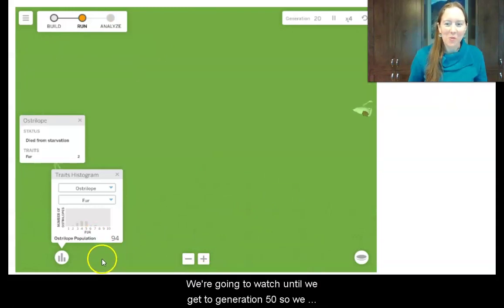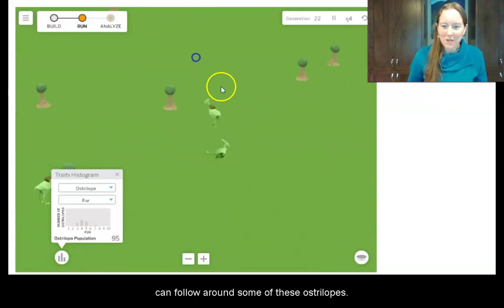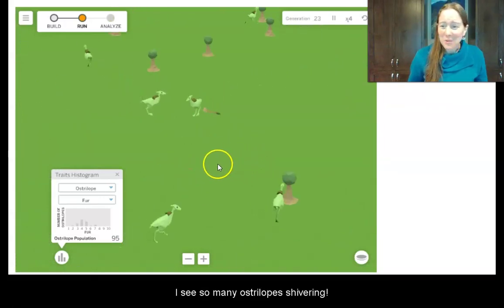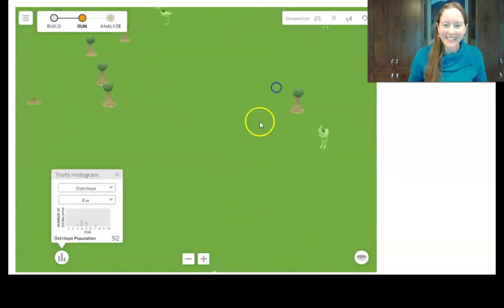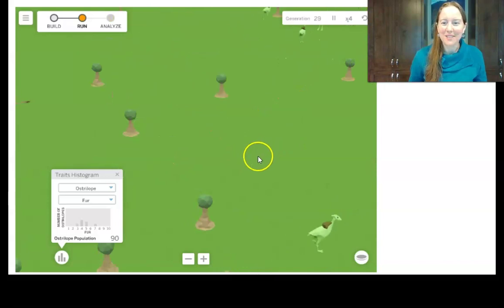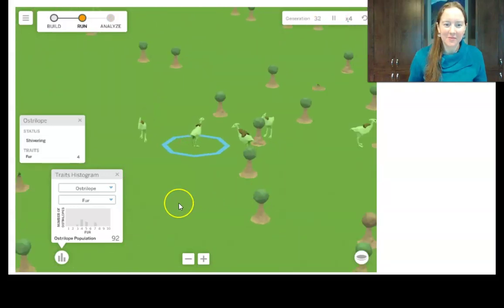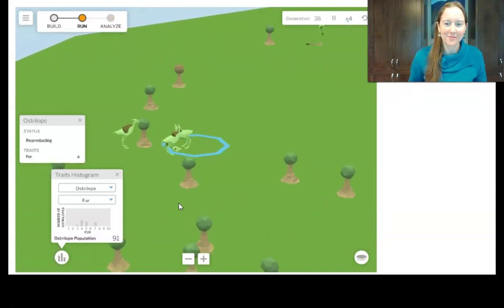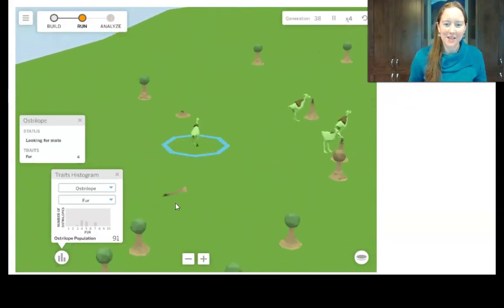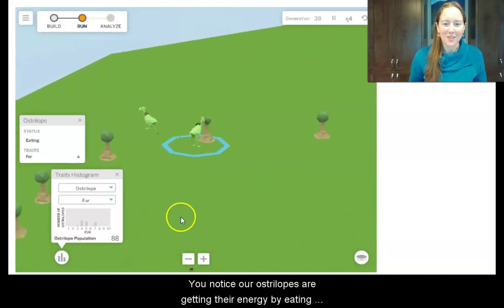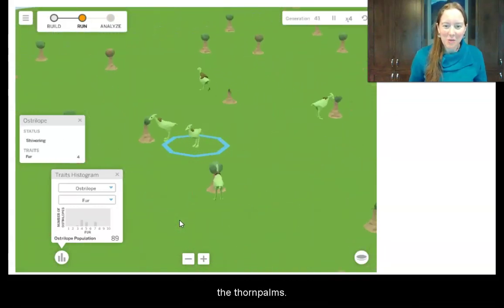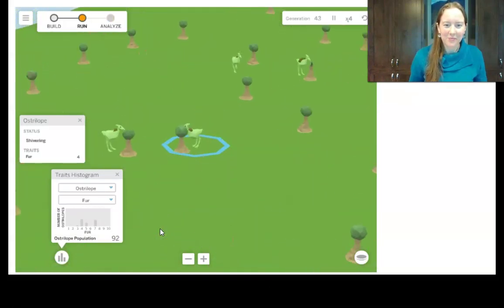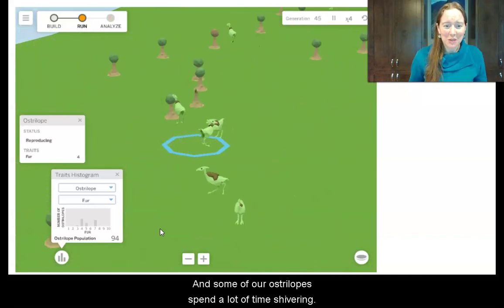Okay, we're going to watch until we get to generation 50 so we can follow around some of these Australopes. I see so many Australopes shivering. Poor little Australopes. So you notice, right, our Australopes, they're getting their energy by eating the thorn palm. They're reproducing. And then some of our Australopes spend a lot of time shivering.